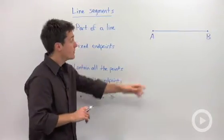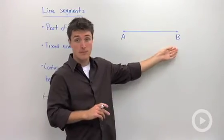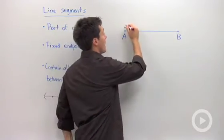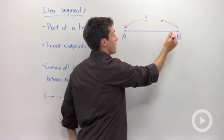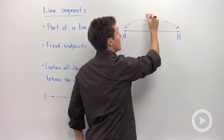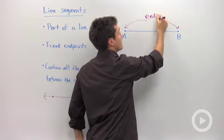So to be more specific, if we had this line segment right here, A and B, A and B are your endpoints. So I'm going to draw the arrow right there, and I'm going to write that these are my endpoints.